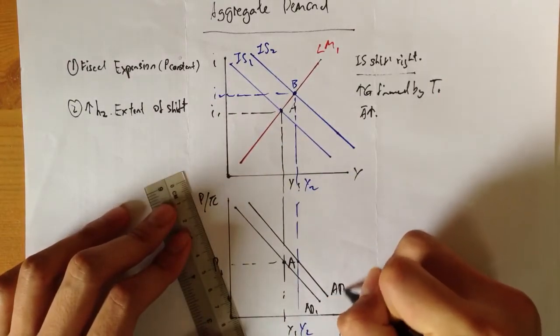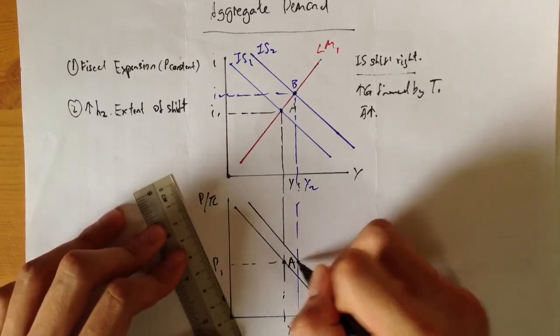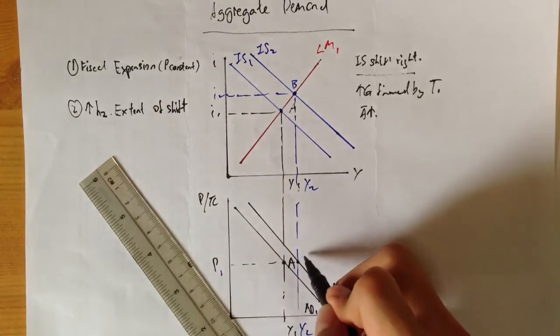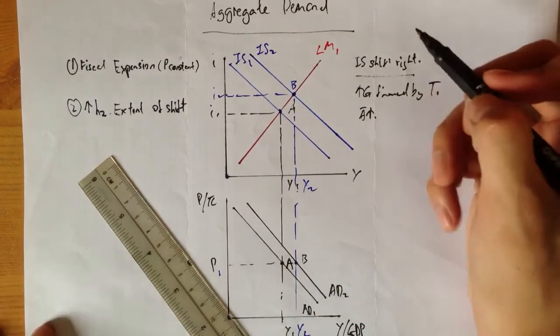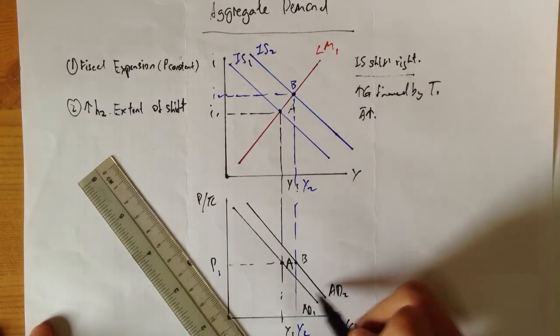You know that the AD curve shifts right from AD1 to AD2. This is your new equilibrium point B.